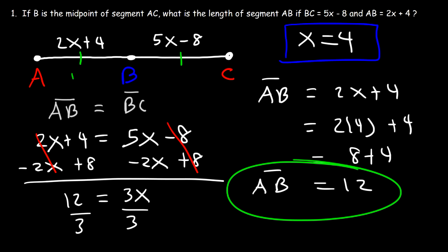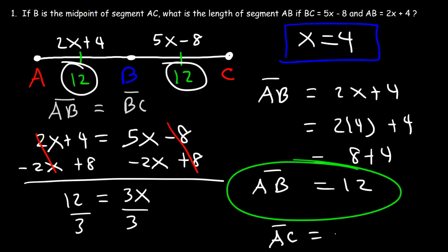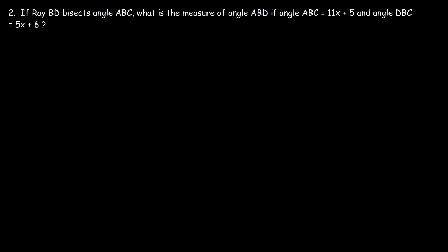That means BC is also 12, and if we needed to find the length of segment AC, we just add those two values: AC equals 24. Here's another problem: if ray BD bisects angle ABC, what is the measure of angle ABD if angle ABC is 11X plus 5 and angle DBC is 5X plus 6?